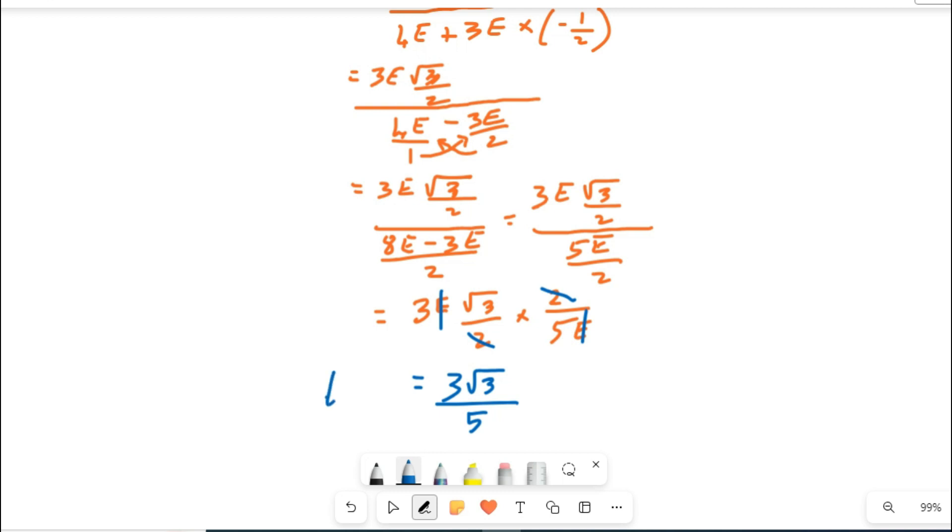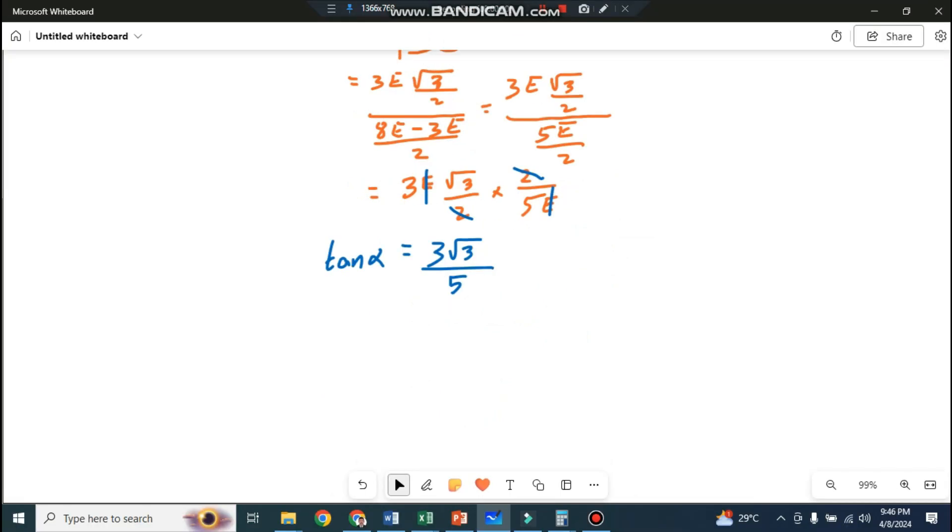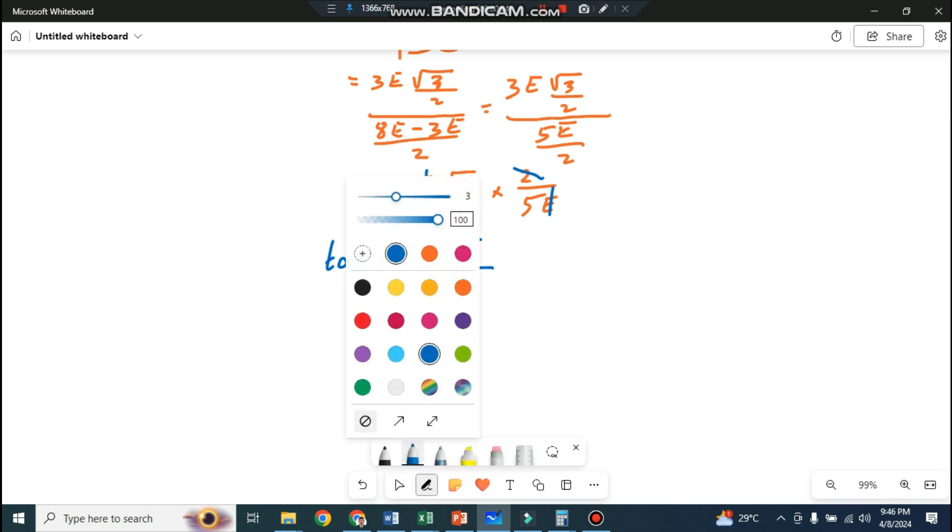So what's left now: on the numerator what's left is 3 root 3, and denominator 5 left. Actually we were writing tan alpha, you remember. So alpha will equal tan inverse of this quantity: tan inverse of 3 root 3 by 5.